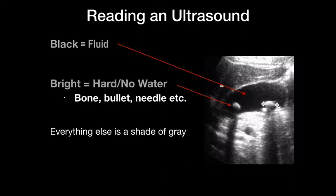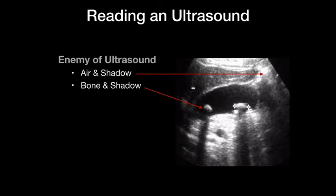Everything else on the screen is a shade of gray, and the darkness of the gray is proportional to the amount of fluid it contains. The liver is a dark gray because it has a lot of blood in it. The gallbladder capsule itself doesn't have much fluid so it's bright. There are also enemies of ultrasound — things you can't image through. The transmitted wave gets stopped, so you can't see anything below that surface. Bones are an enemy — they're so dense they reflect all the sound waves, producing a dark acoustic shadow behind them.